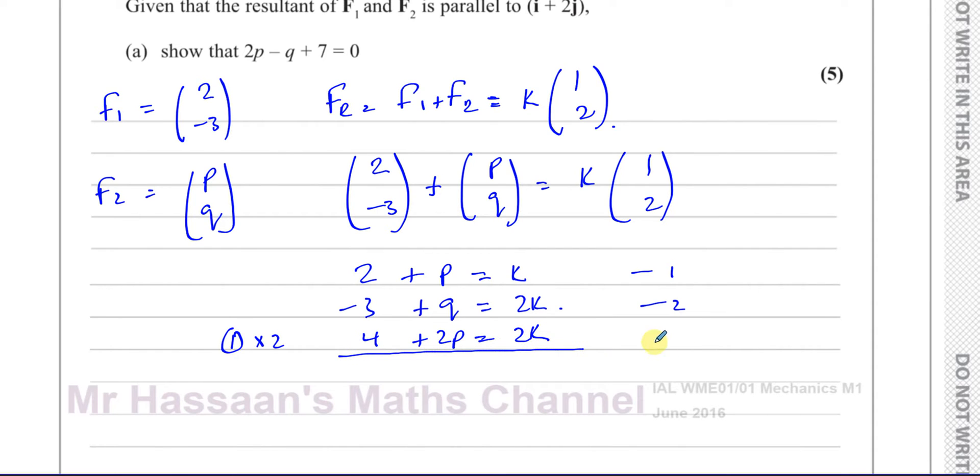So now I have a pair of equations, equation 3, where I have both Ks the same. So I can subtract the two equations from each other. Let's do equation 3 minus equation 2, so the P's remain positive. So 4 minus minus 3, which is 7, then plus 2P minus Q. These will disappear, that gives you 0. So we see 2P minus Q plus 7 equals 0. Therefore, 2P minus Q plus 7 equals 0.